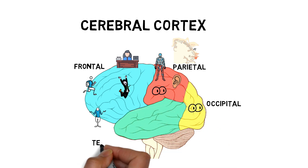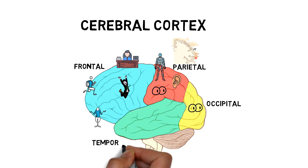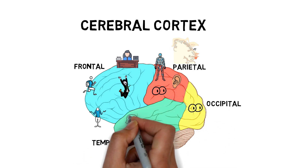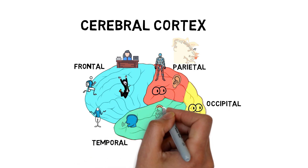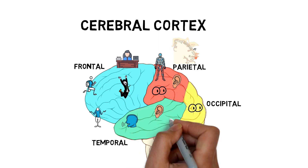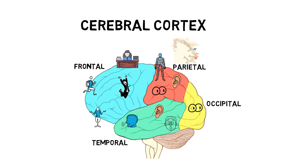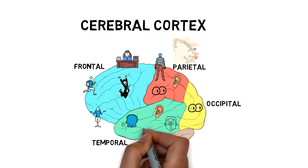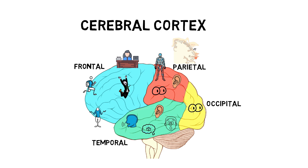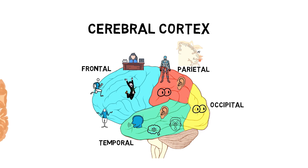Then we move to the temporal lobe. This lobe is important in language, in hearing, recognizing faces and emotions, and also very important in memory. Damage to this part of the brain can cause complete amnesia where you are unable to form any new memories. So you can see that each lobe is associated with different functions.